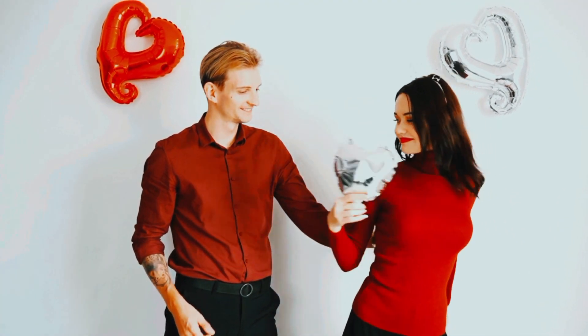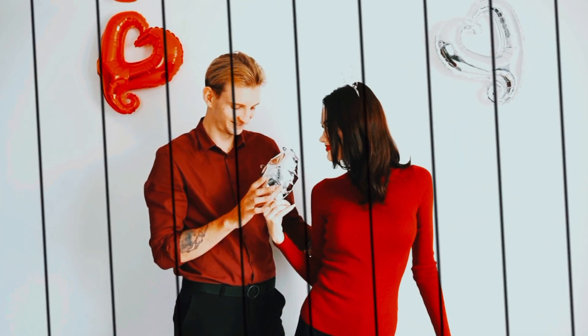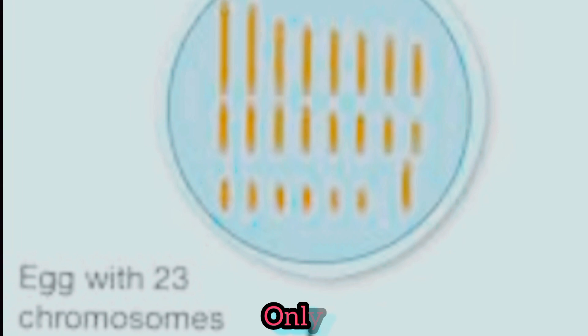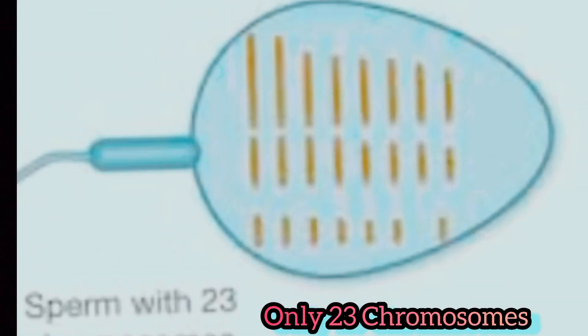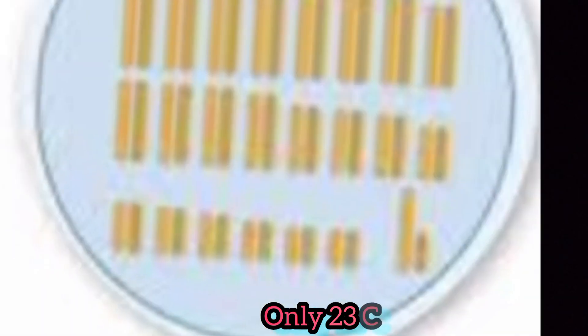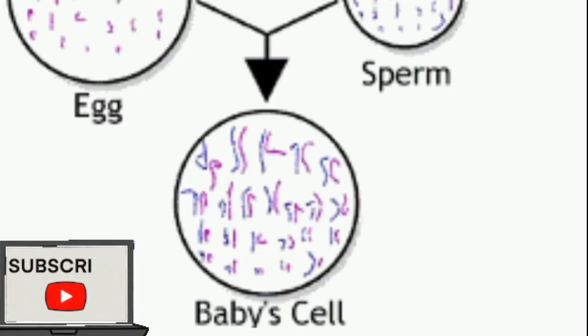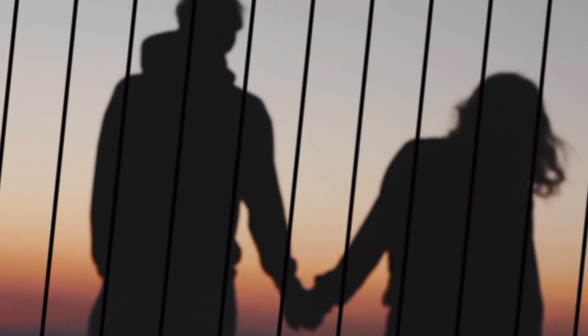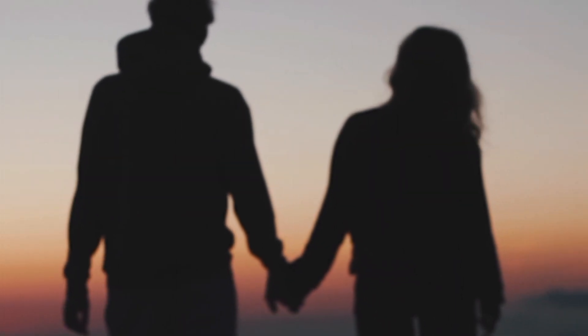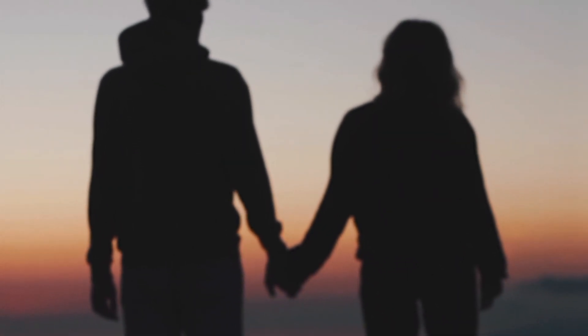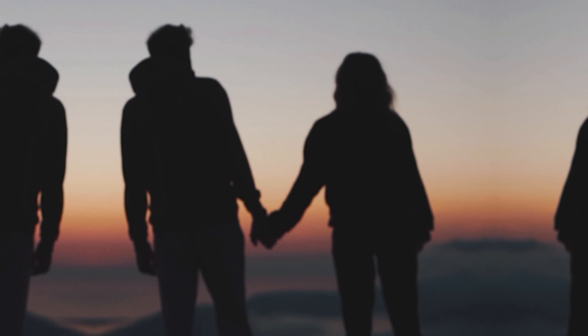Unlike other human cells, reproductive cells are different as they contain only 23 chromosomes each, instead of 46. When fertilization happens, the 23 chromosomes of the male sperm combine with the 23 chromosomes of the female egg, and they form a zygote or a fertilized egg which has 46 chromosomes, or 23 pairs.